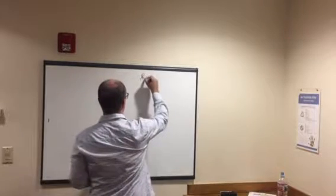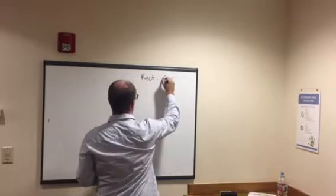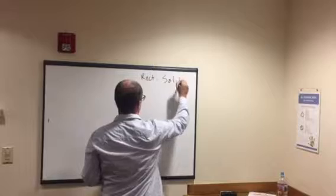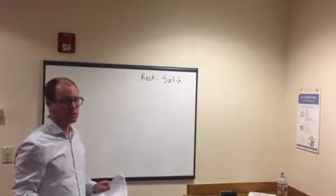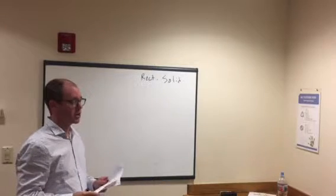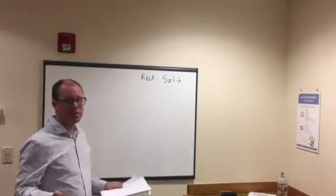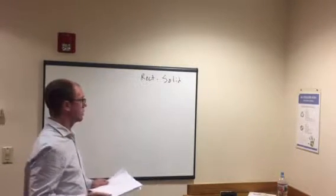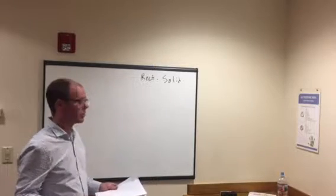All right, so the first one is rectangular solid. That just means it's a box, right? This is really the simplest one. If we see a rectangular box, then it's just length times width times height, and they'll give you all three of those. It'll just say solid for volume.